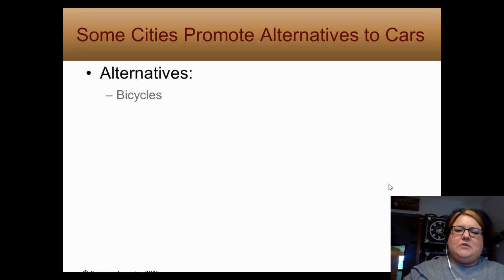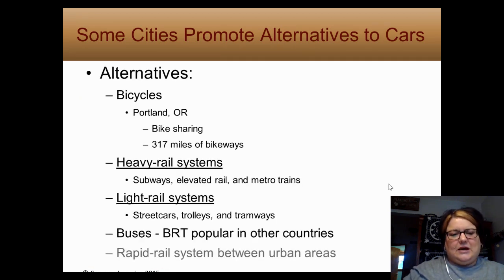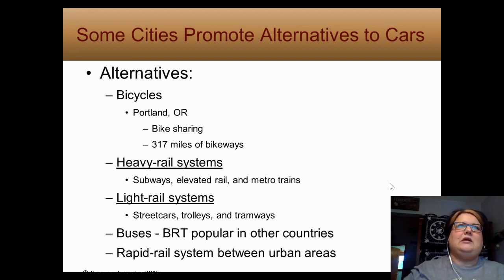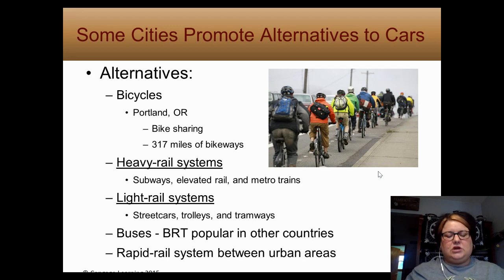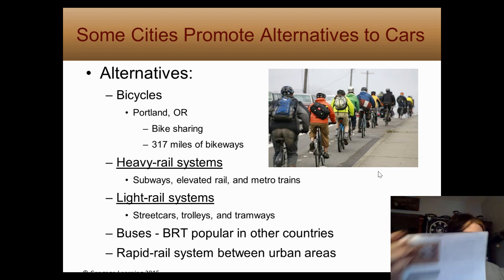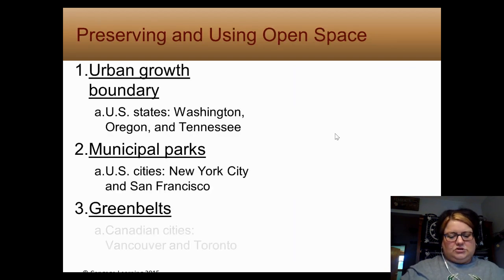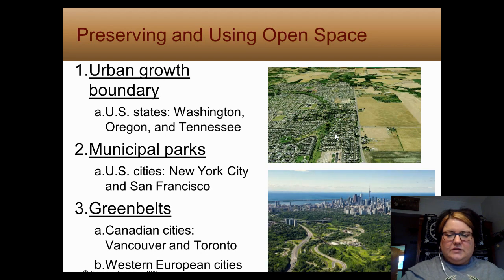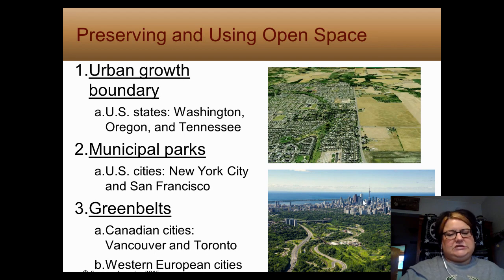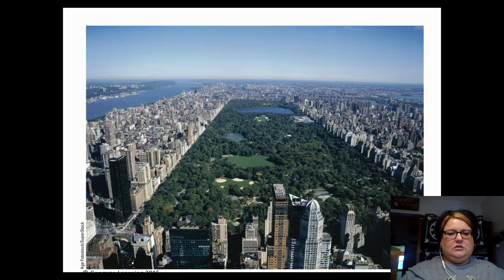Options for reducing car use include biking — in Portland, 8% of workers bike to work, and Minneapolis is also known for biking. Transit options include subways like the L in Chicago (heavy rail), streetcars and trolleys (light rail), buses, and bullet trains common in Europe and Asia. For preserving open space, you can have an urban growth boundary where cities stop — Portland uses this. There are also municipal parks, like Toronto's greenbelt, and Central Park.